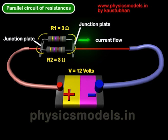As you can see I've got a realistic image created for you where you can see a real battery with a positive and negative terminal. We take a wire from the positive terminal and connect it to a junction plate.